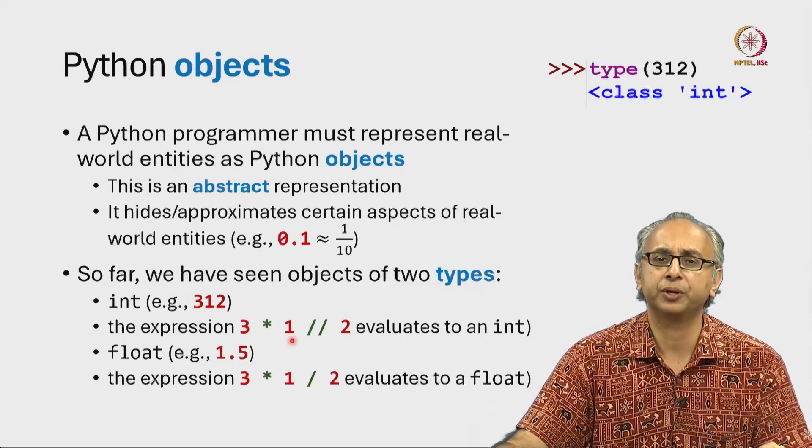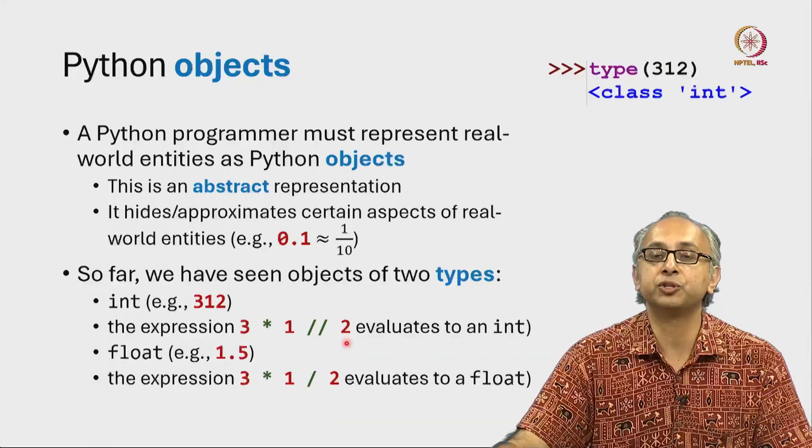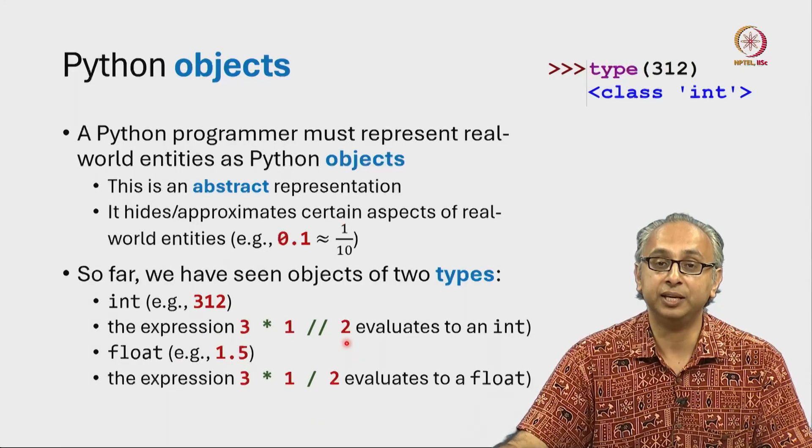Then we will take that integer 3 and do floor division with 2 to give us an integer, namely the integer 1.